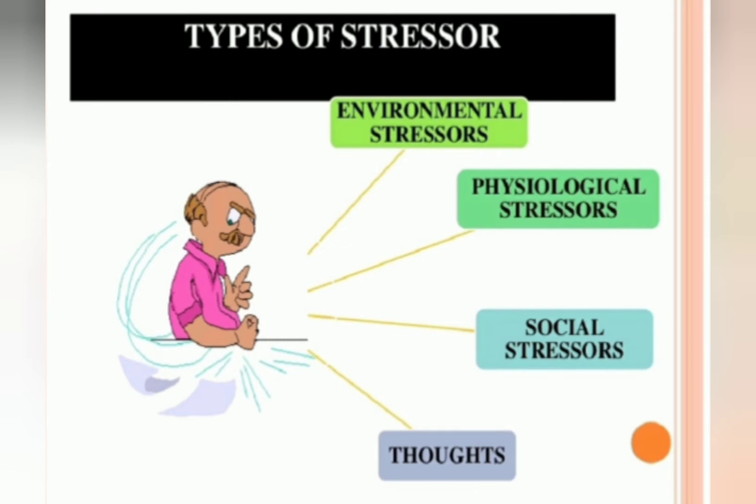The third one is social stressor, which may arise from disturbances in social adjustments. The last one is thoughts — any kind of negative thoughts can cause stress to a person.